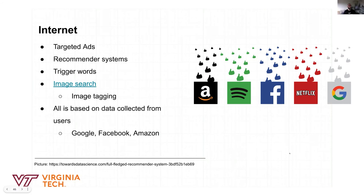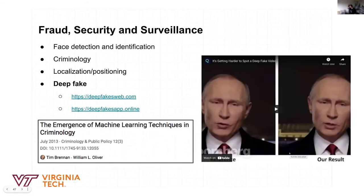Image search is another application — for presentations, I use Google image search by typing a term like supervised learning to find relevant pictures. Fraud detection, security, and cybersecurity are also important fields. Deep fake technology, where you can superimpose words or speech on someone's face and it looks very natural, is very dangerous. A video demonstrates Jordan Peele's fake video of President Obama, illustrating how easy it is to put words in someone else's mouth.